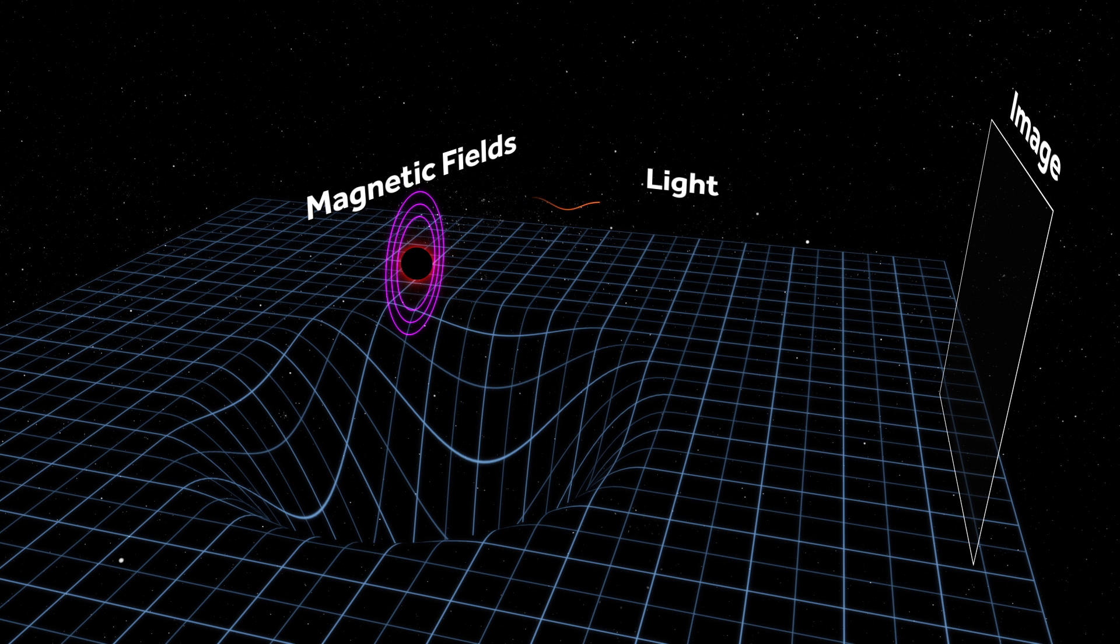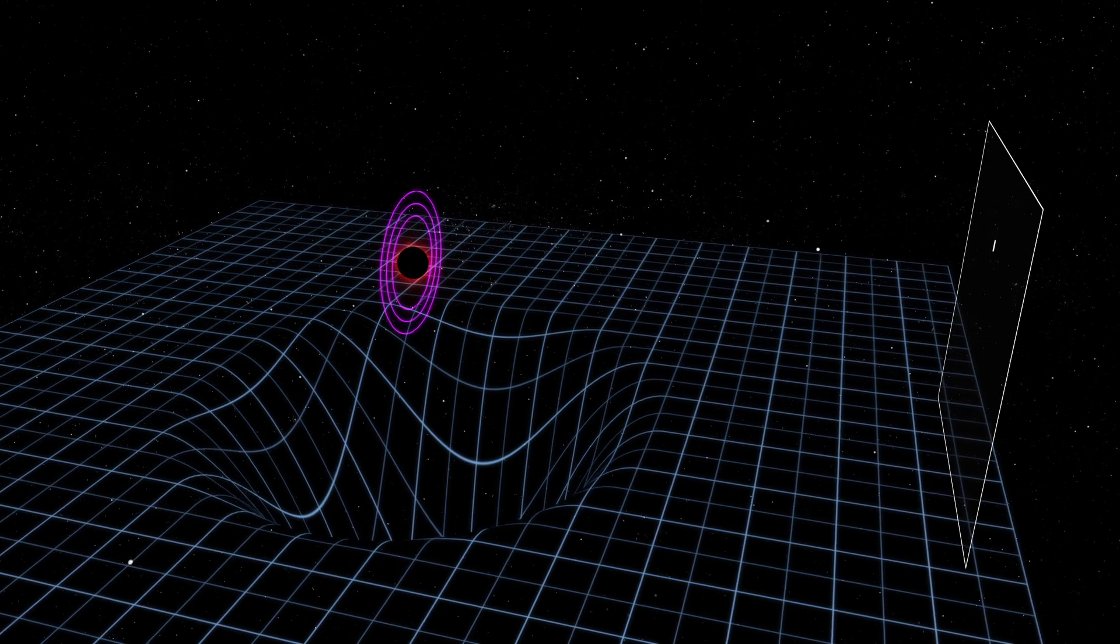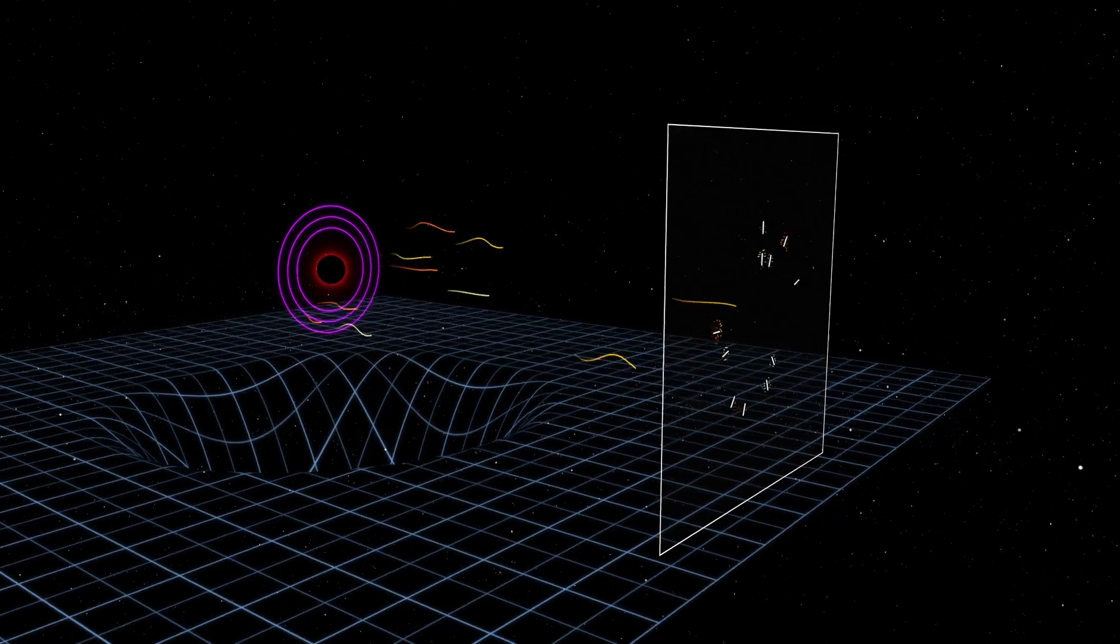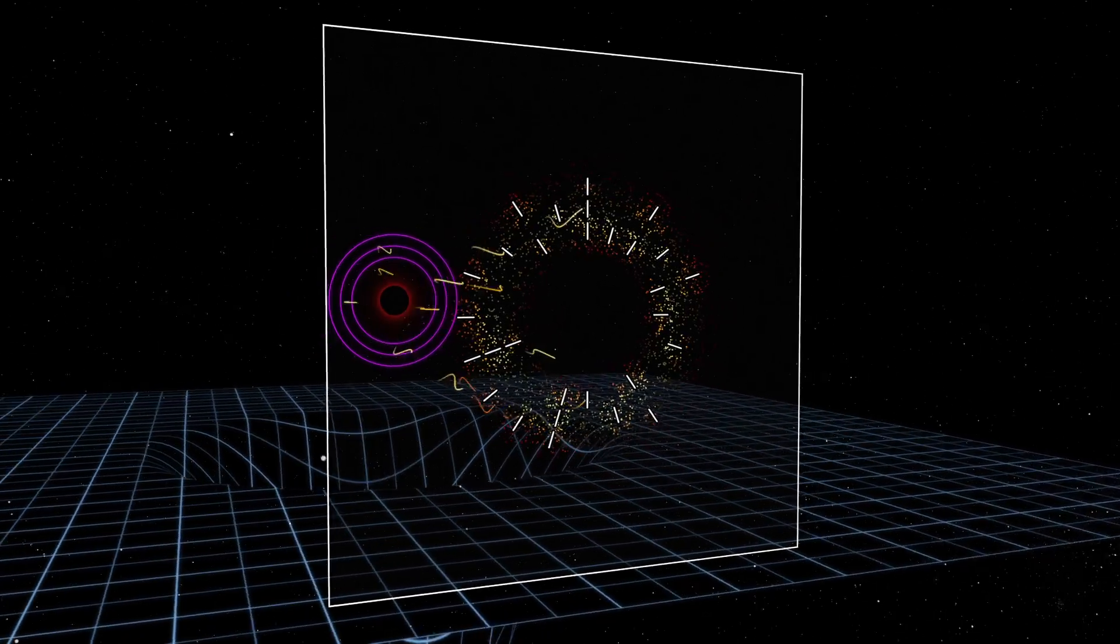The plasma produces light waves that oscillate perpendicular to the magnetic fields, resulting in this polarization pattern, shown here using white tick marks.